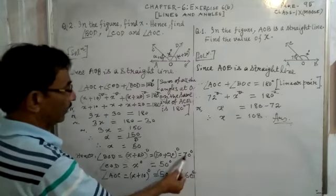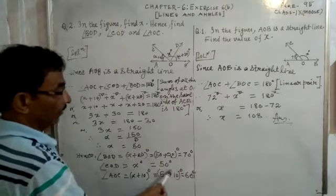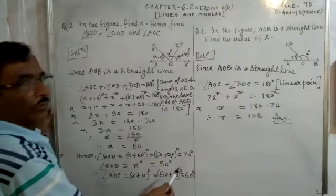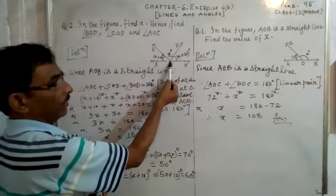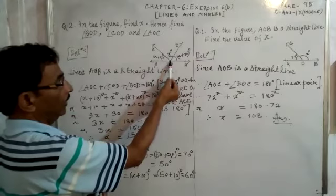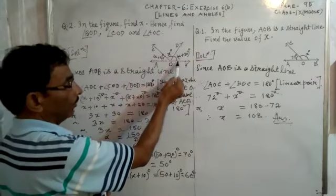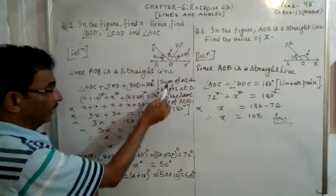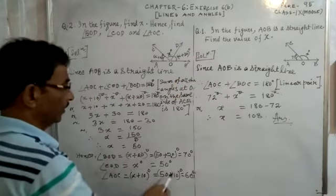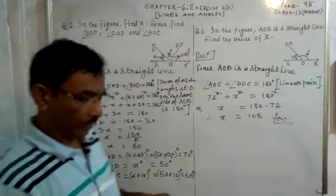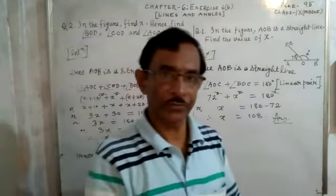If you add all three angles, their sum will be 180 degrees: 70 plus 50 is 120, plus 60 is 180. As we explained, if AOB is a line and O is a point on it, the sum of all the angles on the same side of AOB at point O is equal to 180 degrees. That is the answer. Thank you, my dear students. We will continue with the next problems gradually.